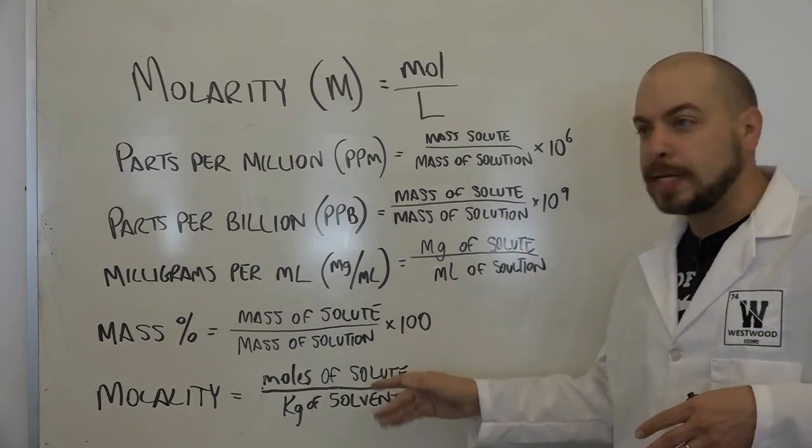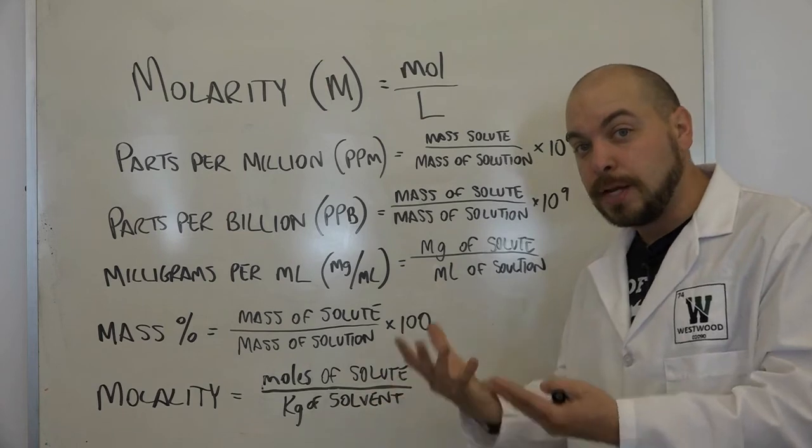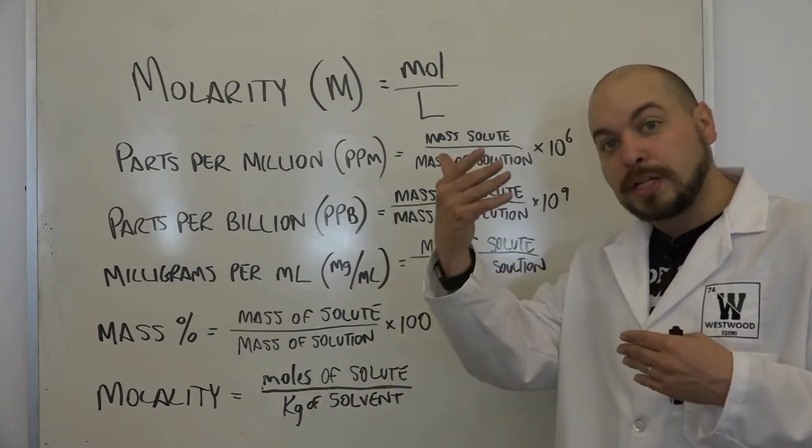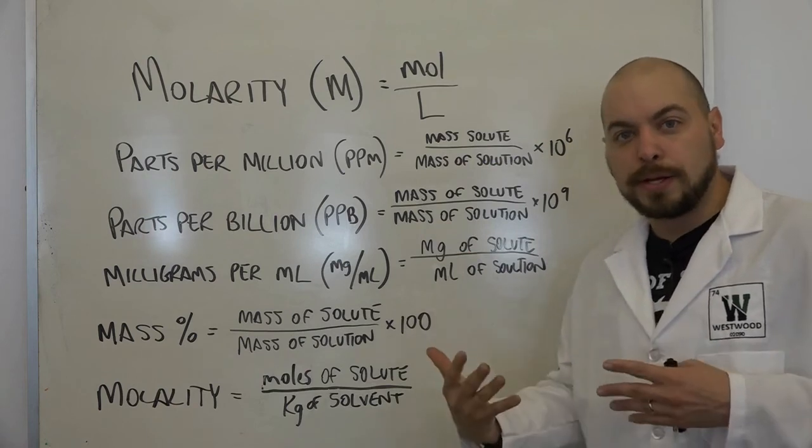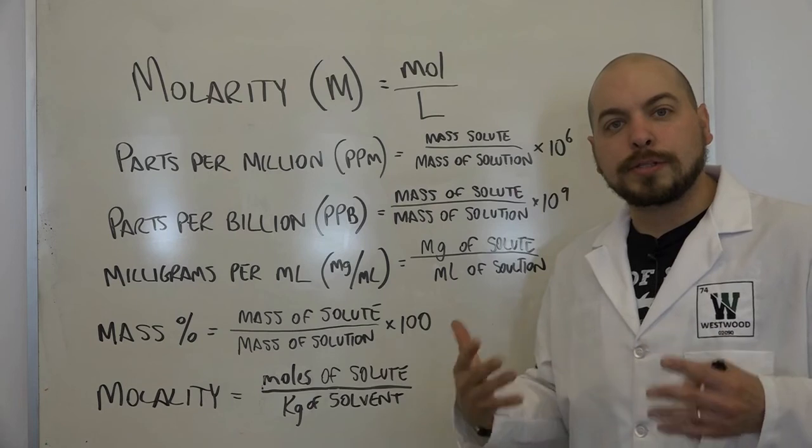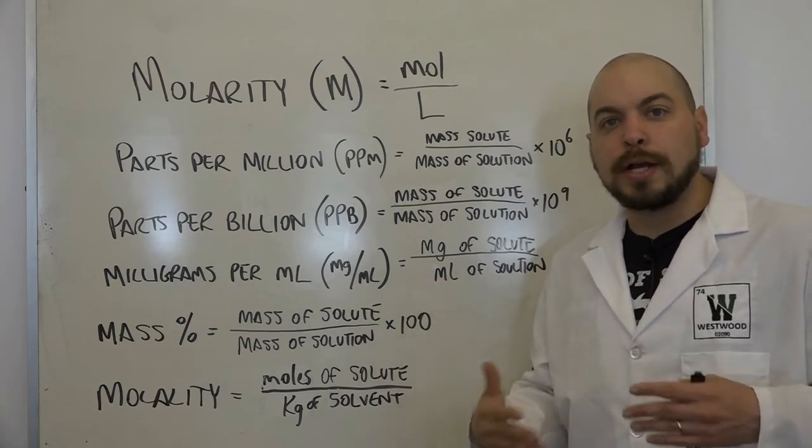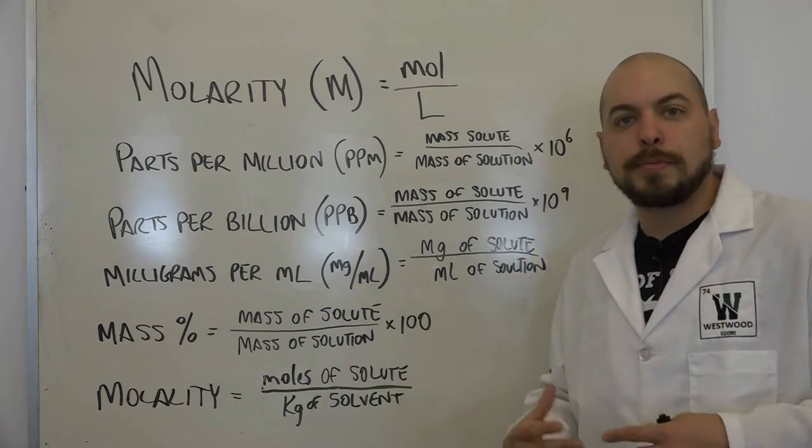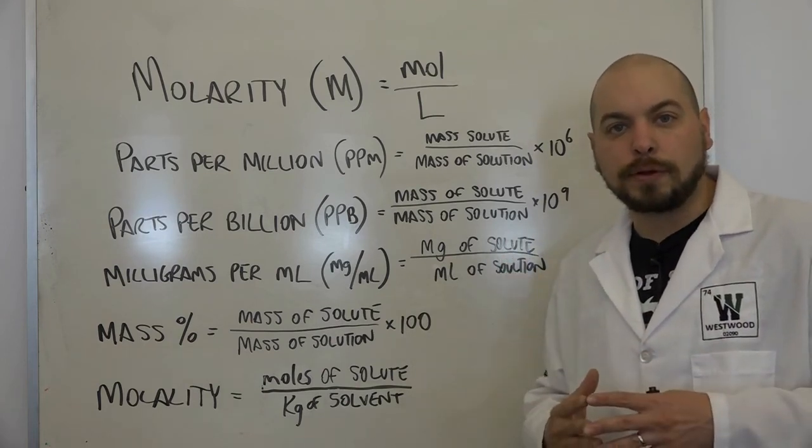Each one of these represents how much stuff is there in a certain volume. And how we account for this amount of stuff and how we account for the volume can vary. And how we represent it can vary. But the most important thing to understand is in every situation, higher concentration means more stuff in a given volume. Lower concentration means less stuff in a given volume.